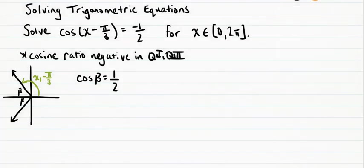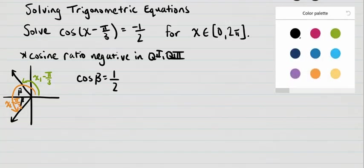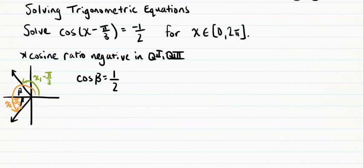Similarly, the solution in quadrant 3 I'm going to label as x2 minus pi over 3. We first solve for beta, and I recognize that one half comes from our special triangles. From our special triangles, the cosine ratio of pi over 3 equals one half, so beta must be pi over 3.